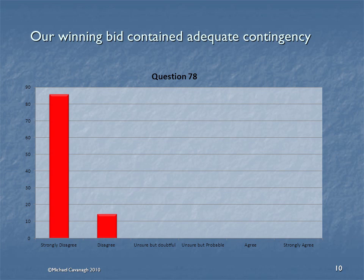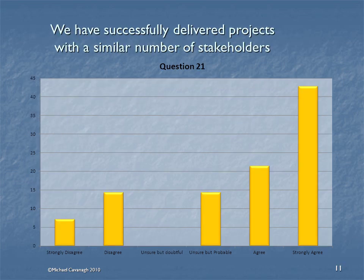There are also going to be areas that need to be fixed immediately. In this particular case, if the bid didn't contain adequate contingency, then we need to do something about that, and there is a strong consensus that we need to act. Most significantly, we need to look at areas where there is a lack of consensus — where people across the team and across the stakeholder population have very different views of whether we are capable of doing this or what our experience level is.